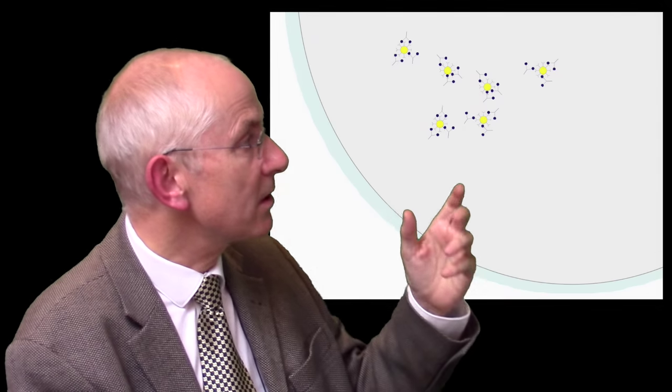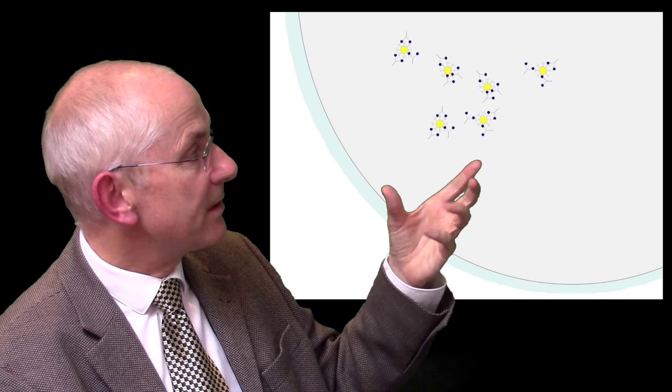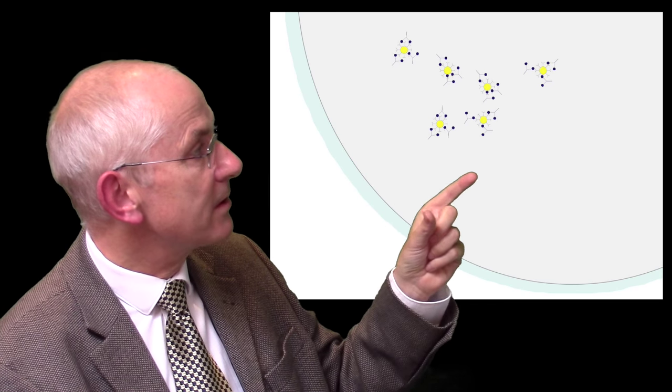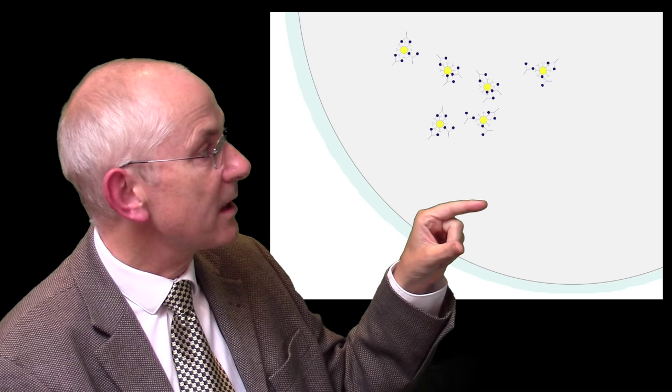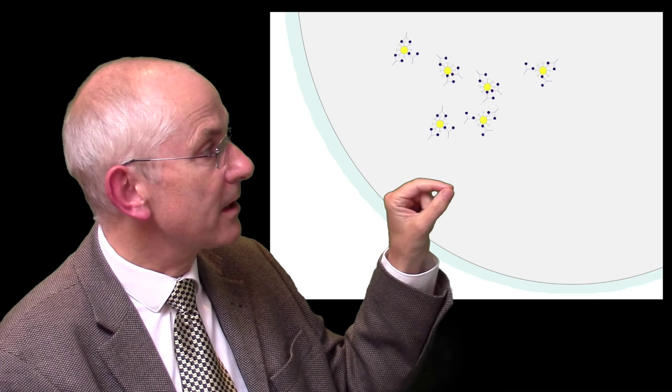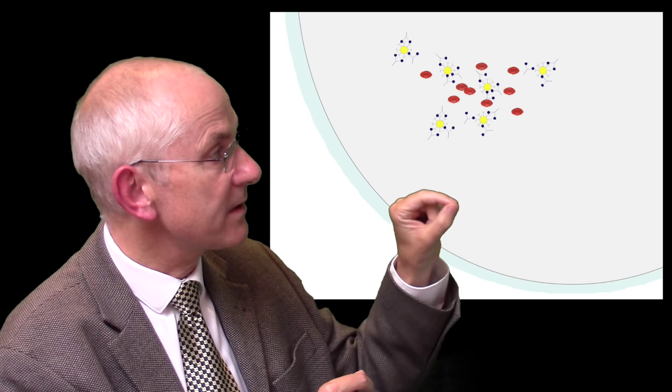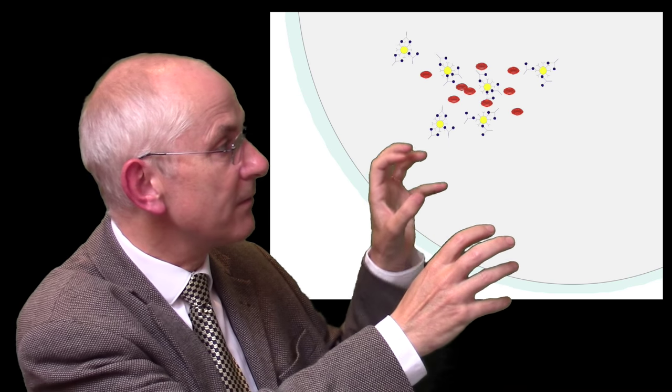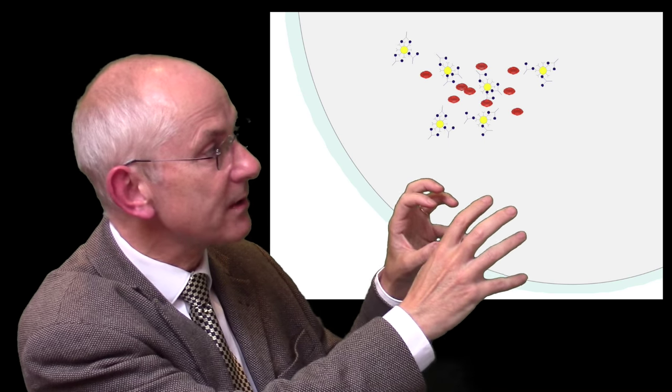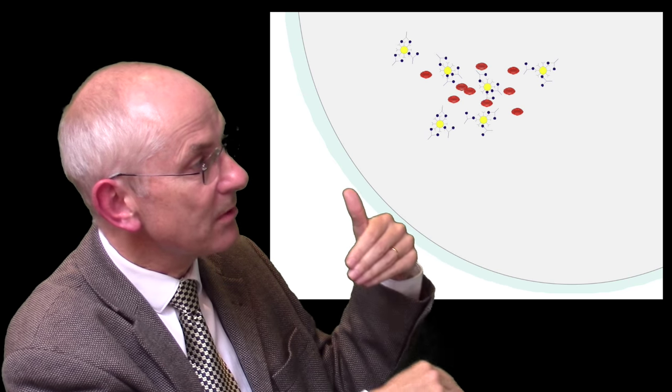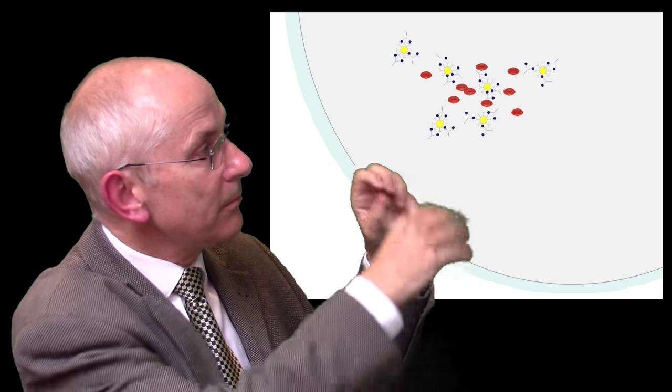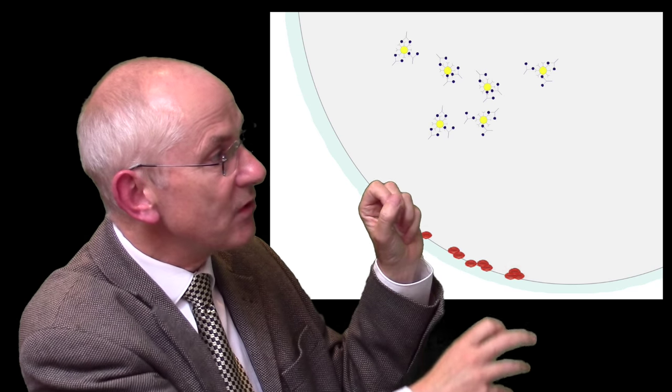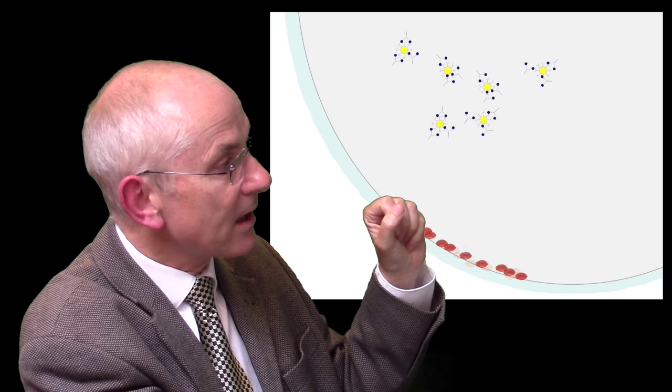The hemagglutination inhibition assay relies on antibodies, specific antibodies, preventing that shield formation. And this works as follows. The specific antibodies bind to envelope glycoproteins on the surface of the virus and thereby prevent those envelope glycoproteins from binding to the receptor molecules on the surface of the red blood cells. And so the virus does not cross-link the red blood cells and doesn't form a lattice at the bottom of the tube. But the red cells now are able to fall freely to the bottom of the tube and form a button.